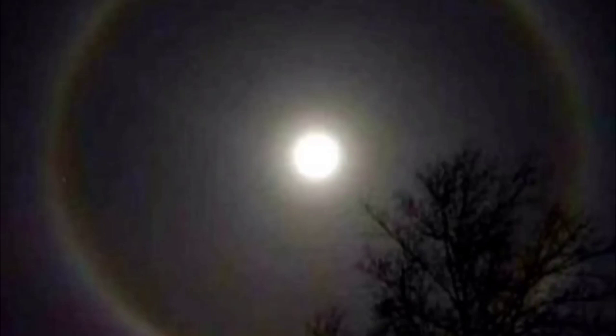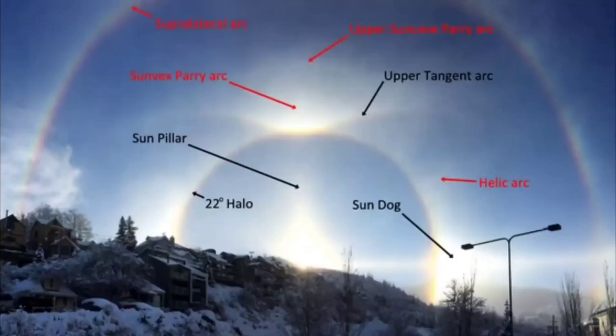If the halo is formed around the moon, it is called a moon ring or winter halo. There are actually many different types of effects — look at this picture: 22-degree halo, sun dog, heliac arc, sun pillar, upper tangent arc, sun vex, parry arc, and many more. All these effects can happen separately or together. Imagine seeing all of these effects at the same time!